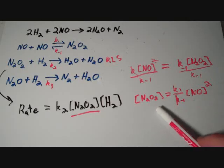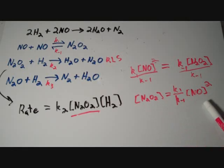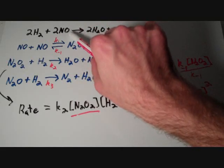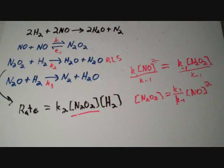So, we have just expressed the concentration of the intermediate in terms of the concentration of one of the reactants as well as a couple of different rate constants.